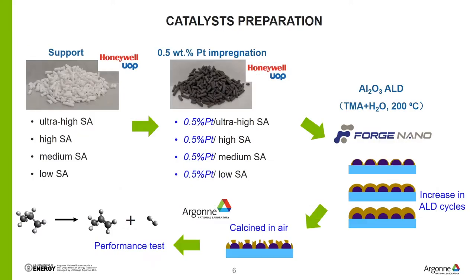This is a summary for the catalyst preparation. Four different surface area supports were synthesized and then 0.5% Pt was loaded on each of them by UOP. After that, different cycles of ALD were overcoated on the Pt catalysts by Forge Nano.